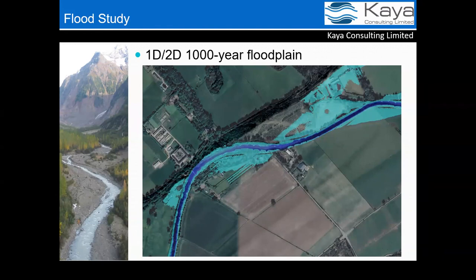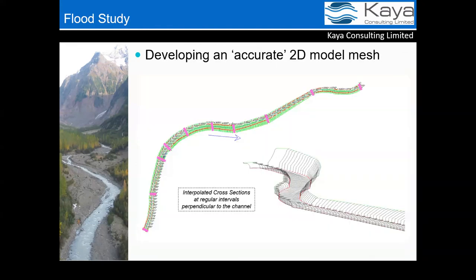The riverbed was represented very poorly in the LiDAR data, so surveyed cross sections were used to improve the bathymetry grid. First, interpolated cross sections were generated between the surveyed cross sections perpendicular to the river — the pink lines are surveyed, the light green are interpolated. An interpolation tool was then run in HEC-RAS to create a mesh of the channel bed as a 3D representation of the interpolated and surveyed cross sections, which was then nested into the LiDAR grid.